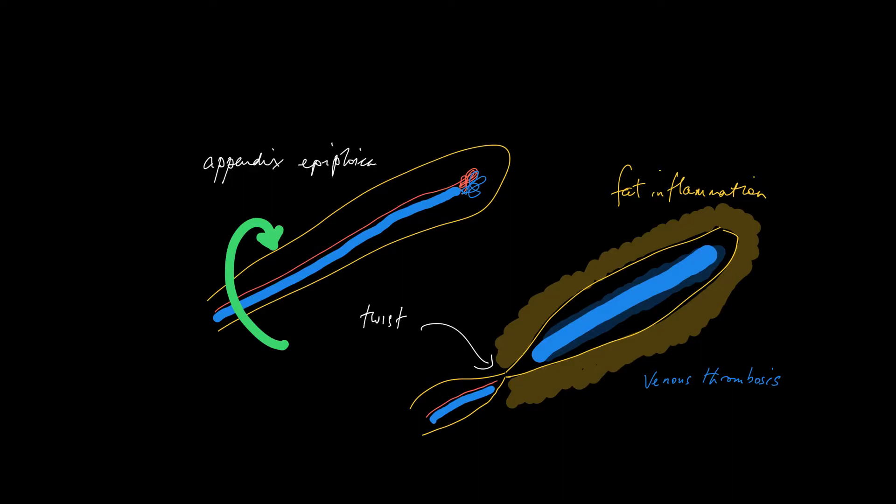The appendix epiploica is a finger-like projection of fat lined by peritoneum and it receives an arterial blood supply and has a draining vein after a capillary network. The plural of appendix epiploica is appendices epiploicae.